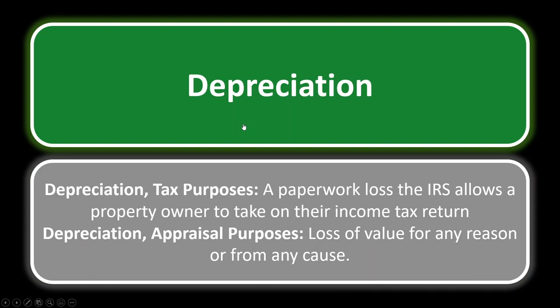Depreciation. You should think of it from two perspectives: one from an appraisal standpoint, and another as a paperwork loss the IRS lets you take on your taxes. For tax purposes, depreciation is a paperwork loss that the IRS allows a property owner to take on their income tax return. It is allowed only for income-producing property, both residential and commercial, but they have different depreciation schedules. For residential, it's 27 and a half years for straight-line depreciation; for commercial, it is 39 years.